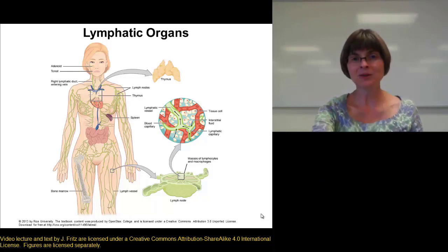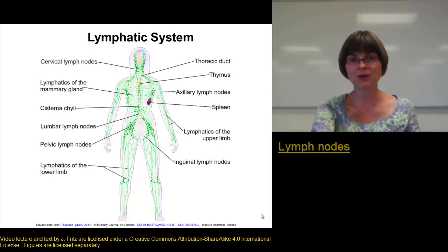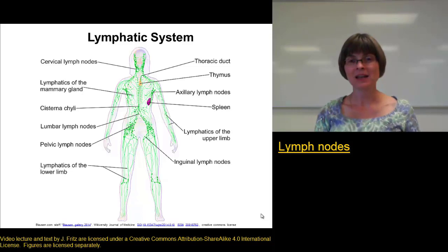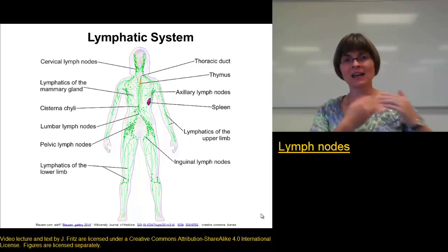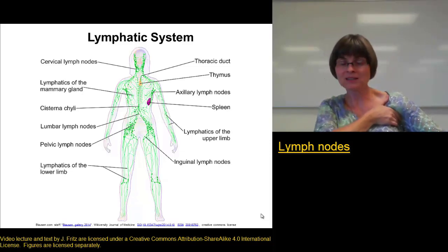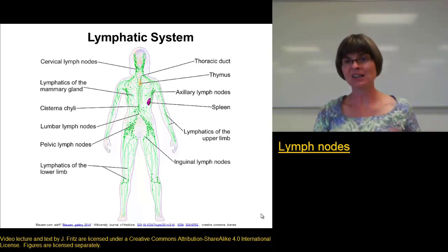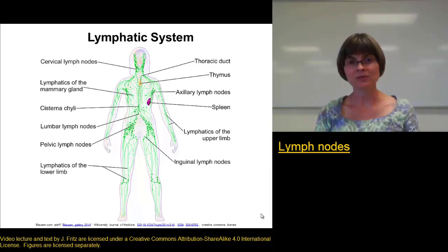Let's start by looking at the most common of the lymphatic organs: the lymph nodes. We have hundreds of lymph nodes throughout the body, found in the highest concentrations along the major blood vessels, and also in areas like the cervical region of the neck, the axillary region or armpits, the inguinal region or groin, and also in the thoracic cavity and pelvic cavity.